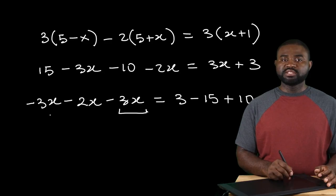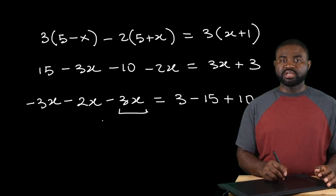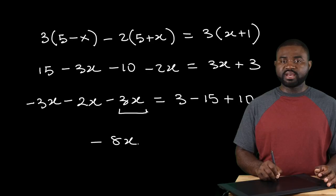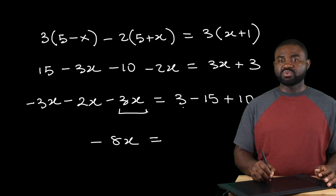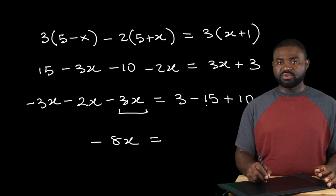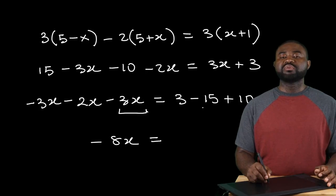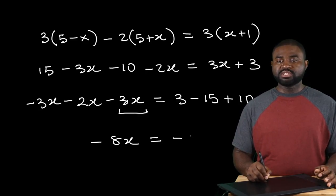Negative 3 plus negative 2 is negative 5. So this is negative 8x. All of this equal to... 3 times negative 15 is going to give you negative 12. Negative 12 plus 10 will give you negative 2.